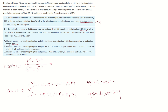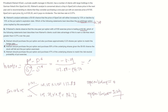Plugging these numbers into the formula: put price when up (0) minus put price when down (5.27), divided by spot price when up (117.88) minus spot price when down (94.73). The H-ratio becomes −0.2276.